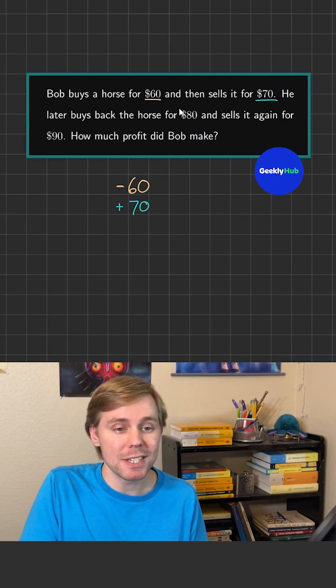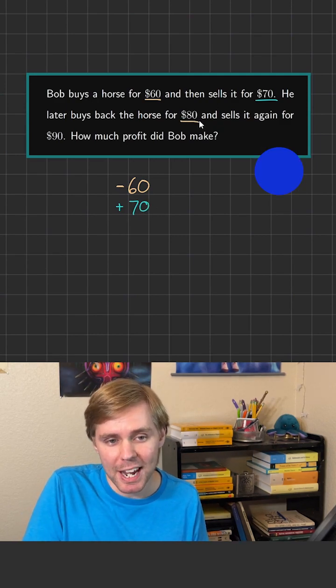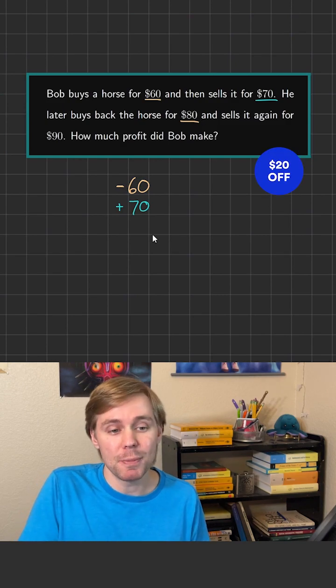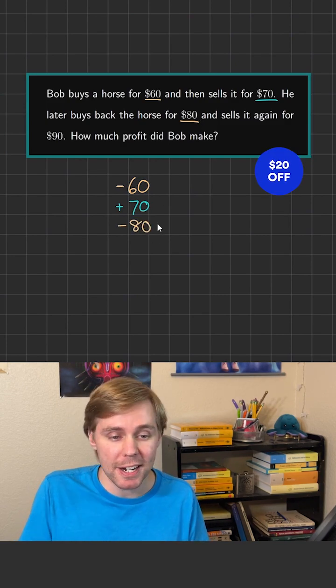And then because apparently Bob doesn't know what he wants, he goes and buys back the horse again for $80. That's going to be another negative transaction to his bank account, minus $80.